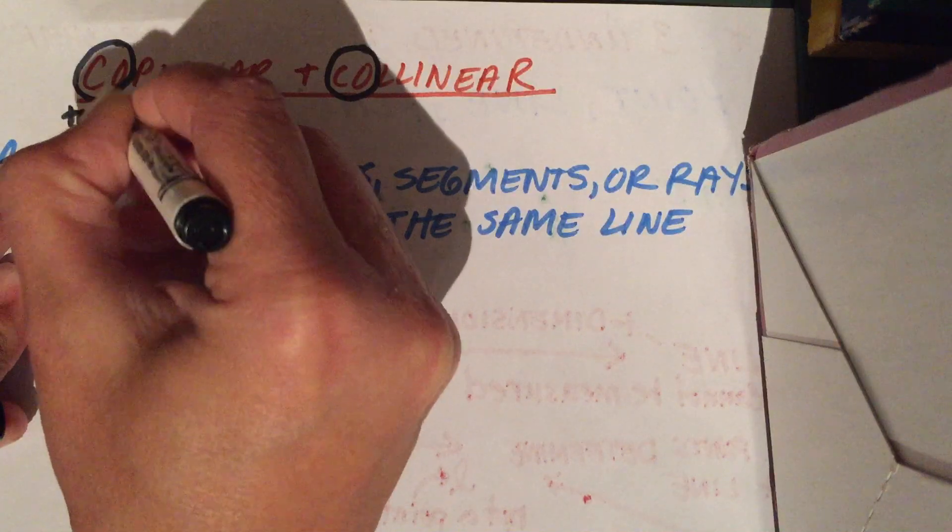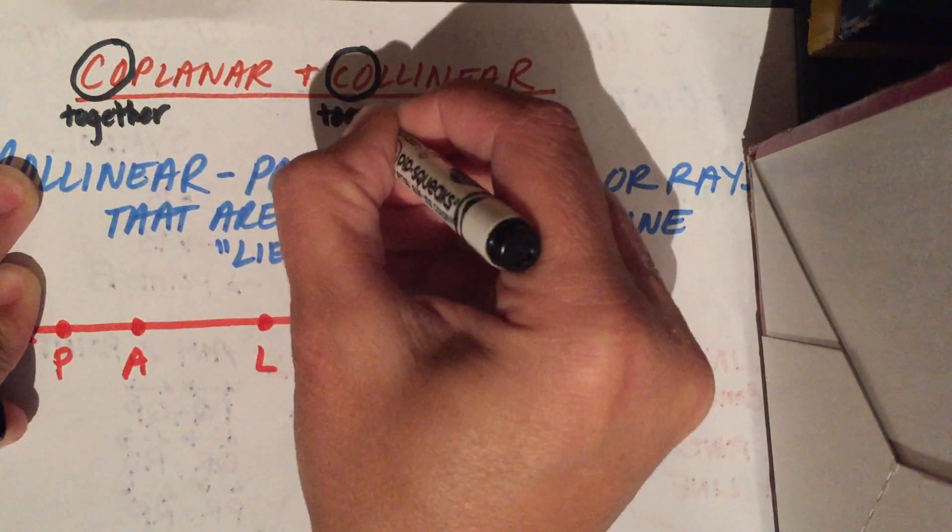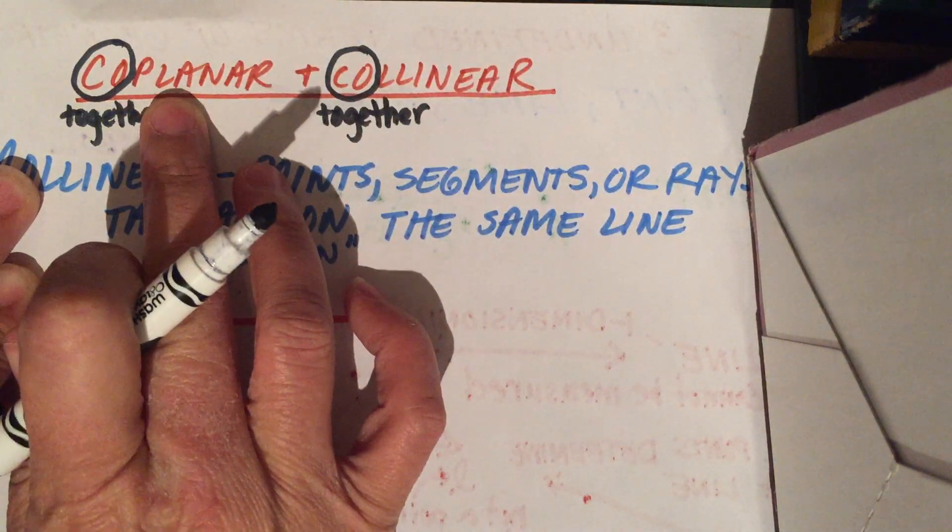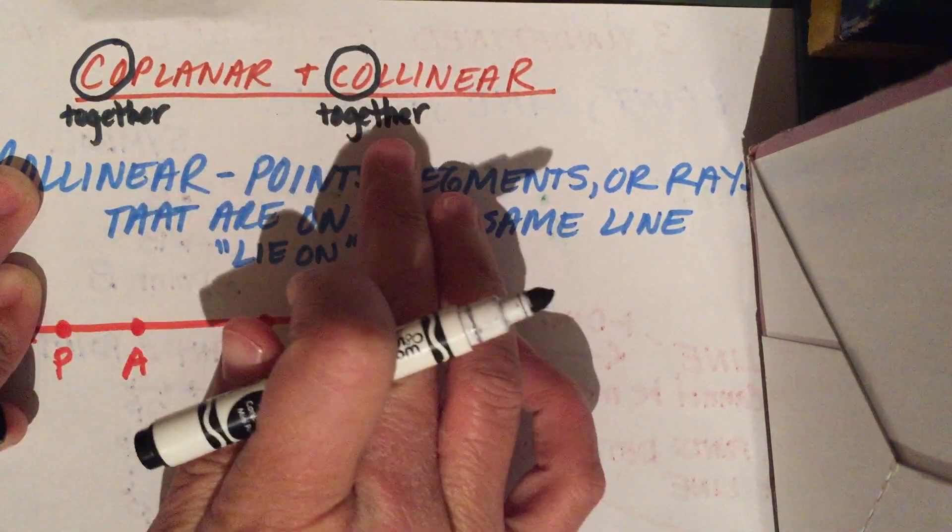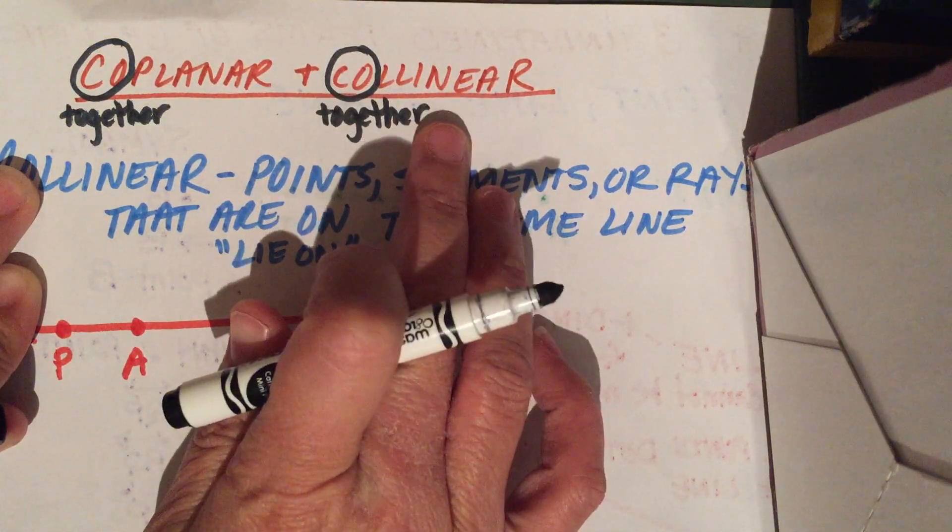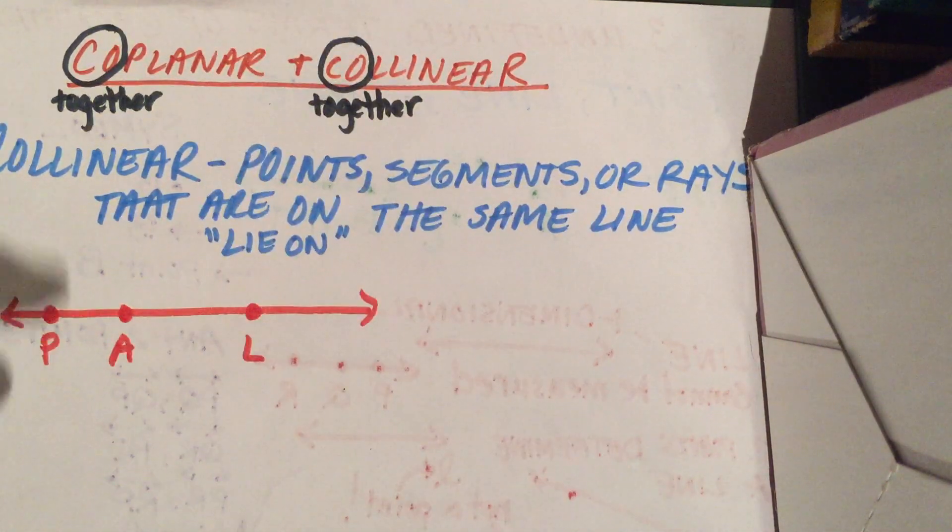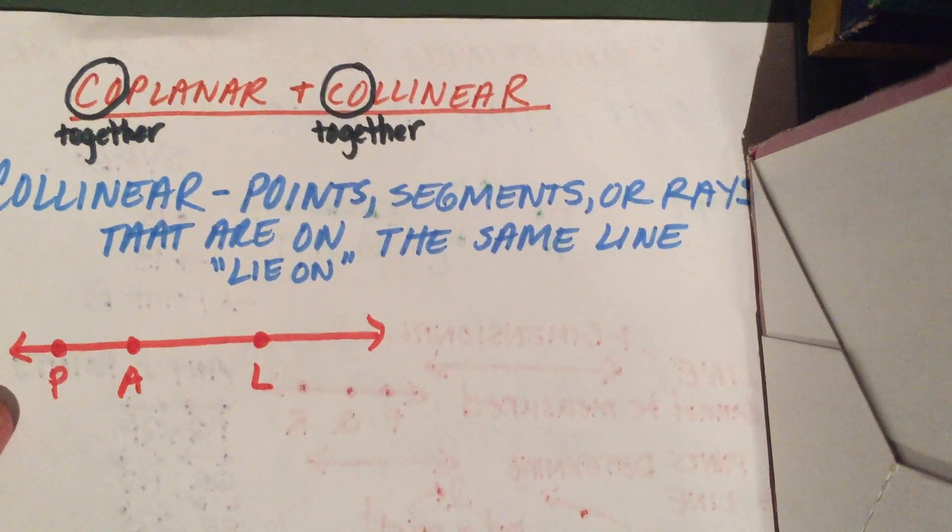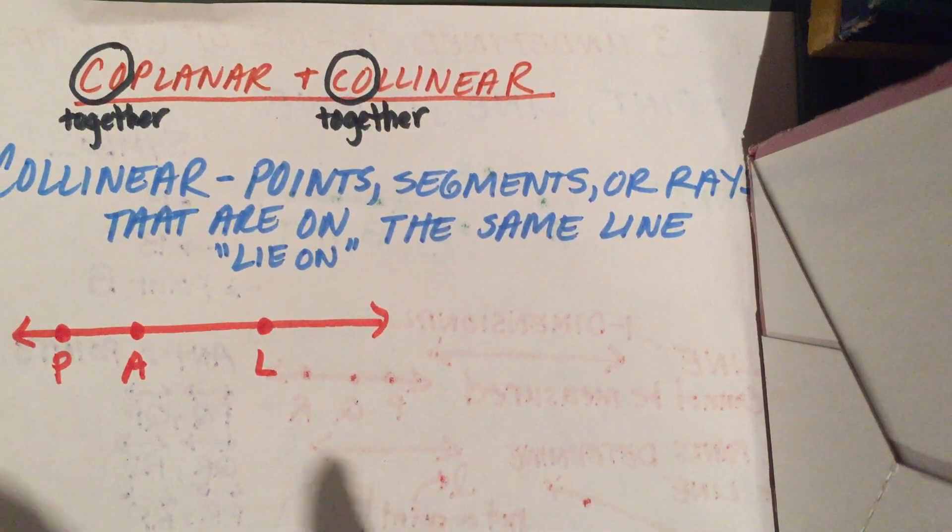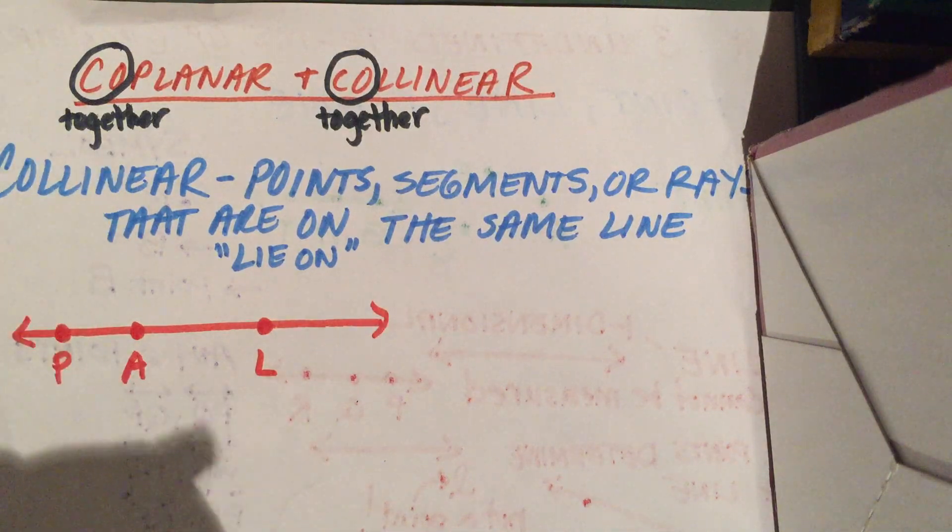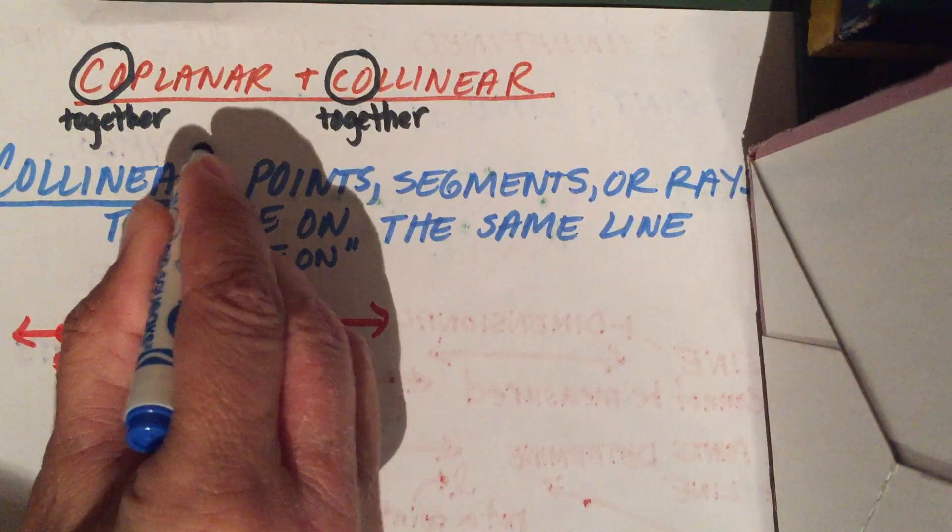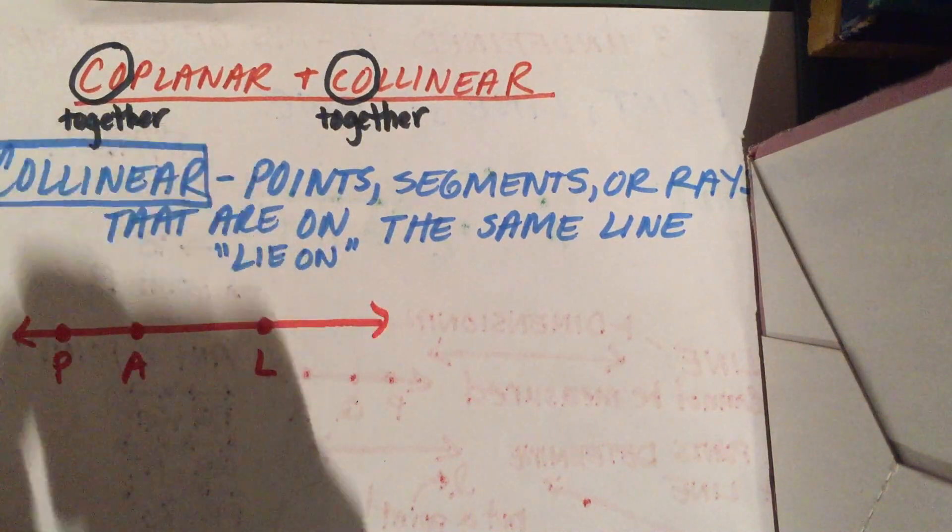So when you're looking at coplanar and collinear, you're looking at the idea of being together. Planar means plane, so together on the same plane. Collinear means line, together on the same line. Always look at the root words. Let's look at collinear first. The definition of collinear is points, segments, or rays that are on the same line.